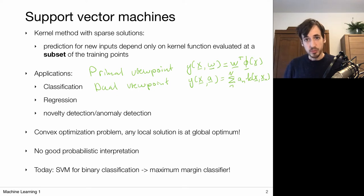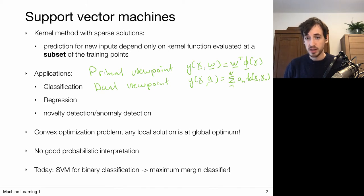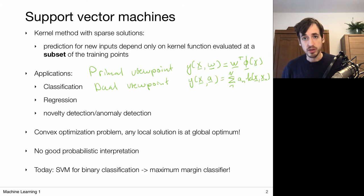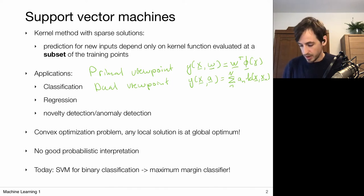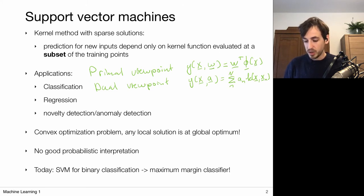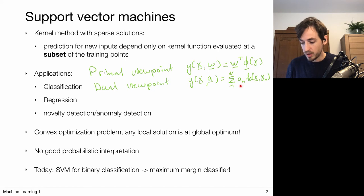Another important property is that support vector machines are obtained via a convex optimization framework, which means there is only one optimal solution. This is unlike neural networks where you have to deal with many local optima. A possible disadvantage is that SVMs do not have a good probabilistic interpretation, but probabilistic alternatives will be covered in the next lecture — those are not necessarily sparse anymore.